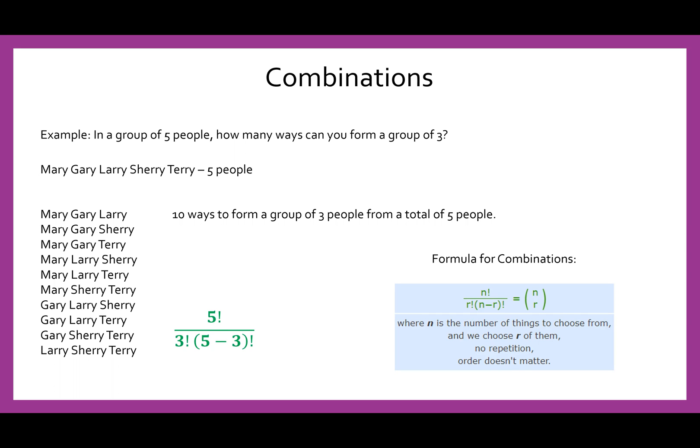Hence, we have five factorial divided by three factorial by five minus three factorial. Okay. Easy math. Five minus three is two. So we have five factorial over the product of three factorial with two factorial. And we just did an example of how to do these. So we could easily compute here once we've mastered this, that it is 10, which we saw in our list.